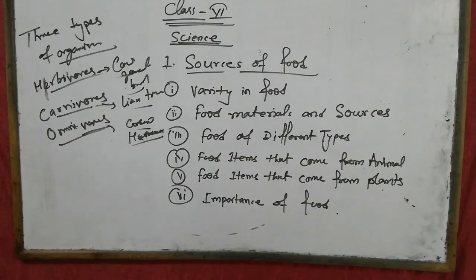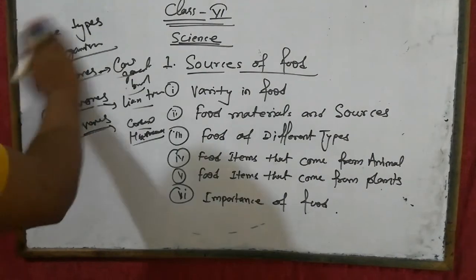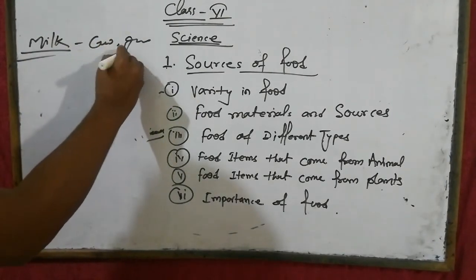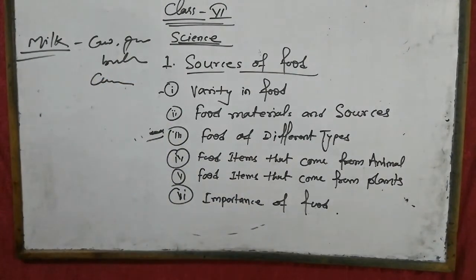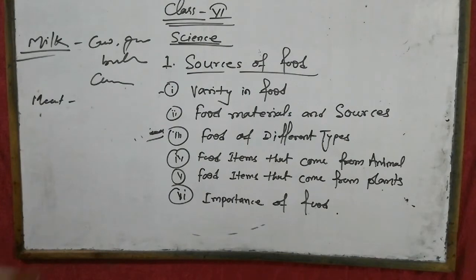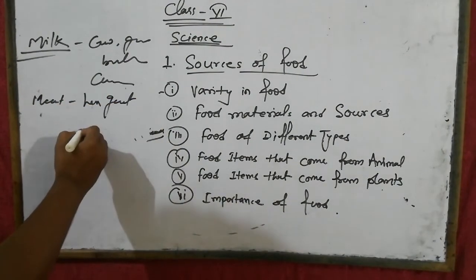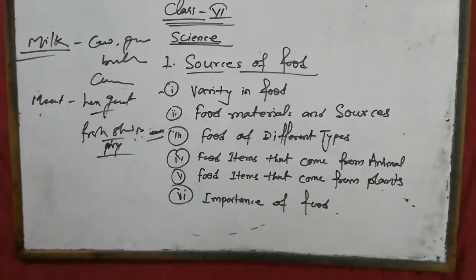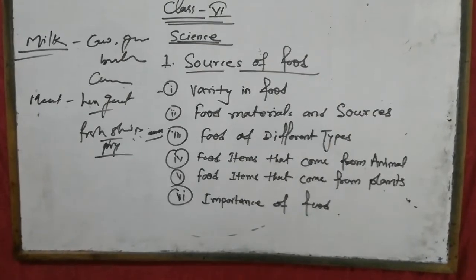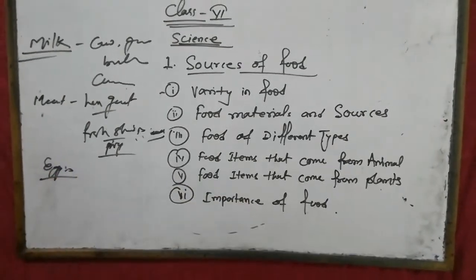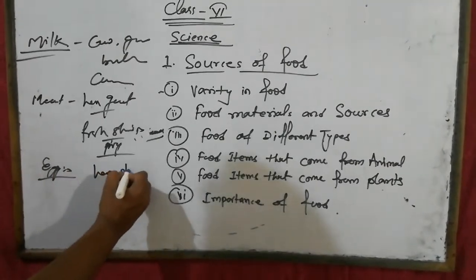Animals have been put into various categories depending upon their utility. If you are talking about milk, it comes from cow, goat, buffalo and camel. Meat comes from hen, goat, fish, sheep, pig and other animals. Egg comes from hen, duck and so on.